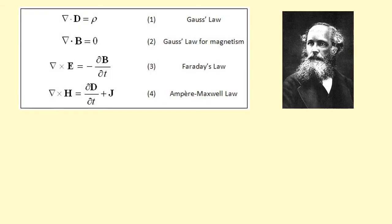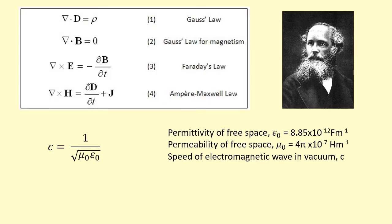He found that the speed of these electromagnetic waves should equal 1 over the square root of the permittivity of free space times the permeability of free space. If we put these numbers in and calculate this, you can see it's a constant, and it turns out to be 3 times 10 to the 8 meters per second.